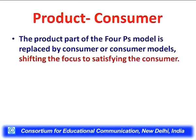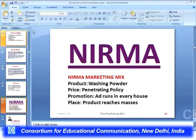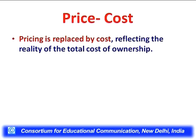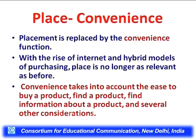In the four C's model, product is replaced by consumer, shifting the focus to satisfying the consumer. Price is replaced by cost, reflecting the reality of the total cost of ownership. Place is replaced by convenience — with the rise of internet and hybrid models of purchasing, place is no longer as relevant as before.